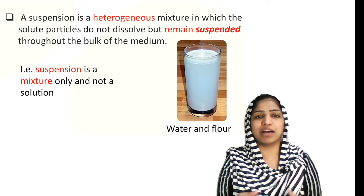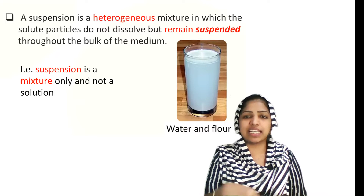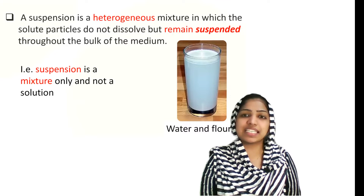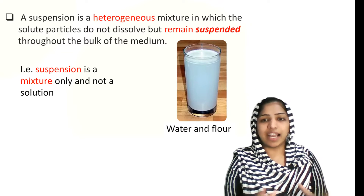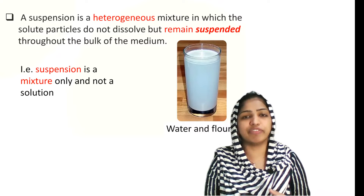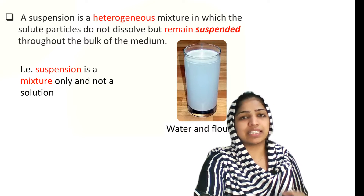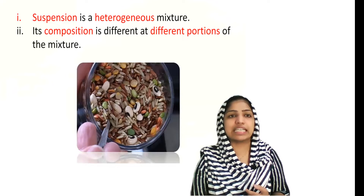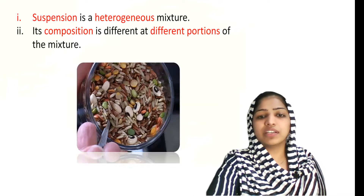The size of the particles in suspension is small but visible. The solute particles settle down, so it is called a heterogeneous mixture, which is called suspension. The suspension is a mixture of liquid and solid. Heterogeneous mixture is different at different portions of the mixture — that is suspension.